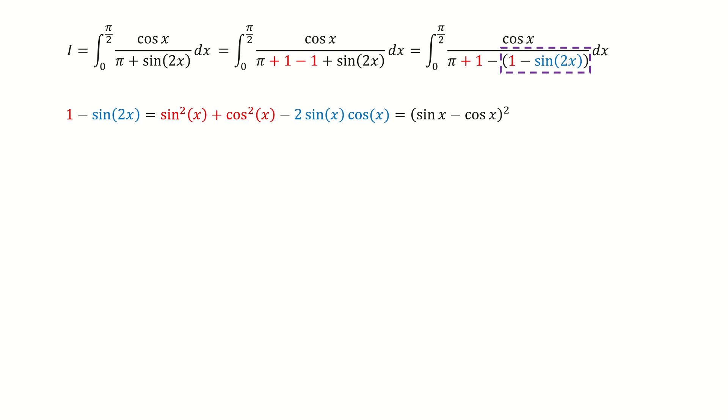In this case, we can complete the square. Then we define pi plus 1 equals a squared. So we can write this integral into this form.